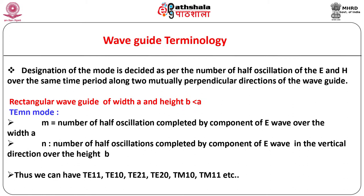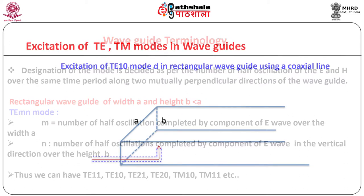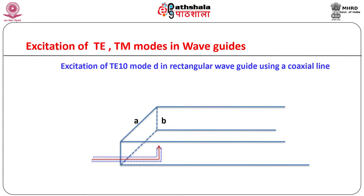In the case of a rectangular waveguide of width A and height B, the mode is denoted by TE_MN or TM_MN depending on the number of half oscillations M and N completed by the E or H wave components along the width A and height B respectively. Thus we can have modes such as TE11, TE10, TE21, TE20, TM10, TM11, etc. Various modes are expected to propagate through the waveguide without attenuation. So we are discussing different types of modes such as TE_MN, TM_MN — but how are these modes actually excited in the waveguide?